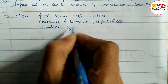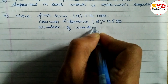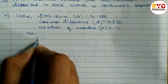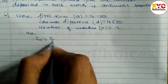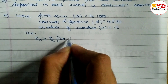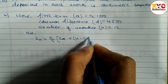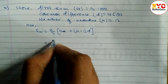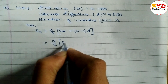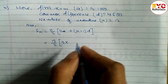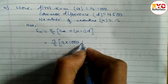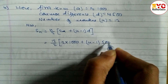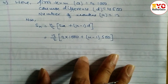Number of months n is equal to 12. Now we know the Sn formula is: Sn = n/2 × (2a + (n−1)d). So Sn = 12/2 × (2×1000 + (12−1)×500).